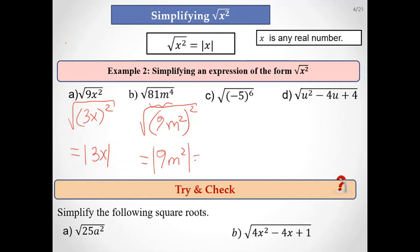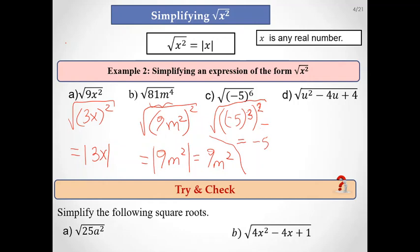For the next expression, we check if it is a perfect square. We can write it as negative 5 cubed, all squared. When you take the square root, this equals the absolute value of negative 5 cubed, which gives a positive result.